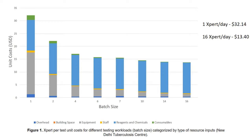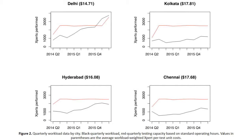The unit cost per batch size for the Delhi laboratory shows that running one GeneXpert test per day costs about $32, whereas running the maximum of 16 tests in an eight-hour workday drops costs to $13.40. Uniquely, for each of the four laboratories and each day of operation, we had exact numbers of GeneXpert tests performed, allowing us to place actual batch sizes along the cost curve. Using workload-adjusted numbers, we calculated accurate average per-test unit costs for each of the four laboratories.